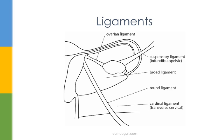Here we have all the ligaments. The ligaments can be divided into three categories. First, you have the broad ligament. Then you have the ovarian ligaments, which consist of the ovarian ligament and the suspensory ligament, also known as the infundibulopelvic ligament. The third category includes the uterine ligaments, which have the round ligament, the cardinal — also known as the transverse cervical ligament — and the pubocervical and the uterosacral ligaments, which aren't pictured here.